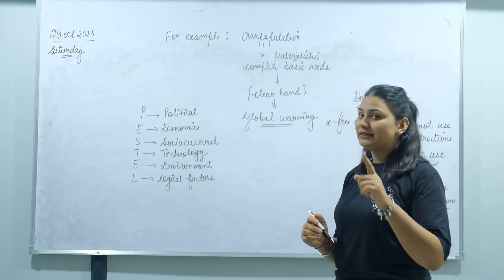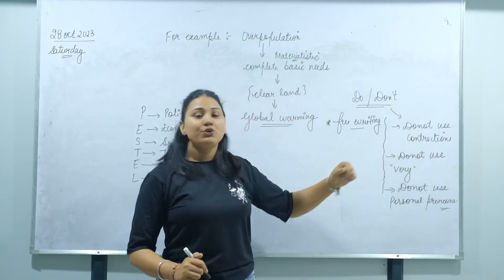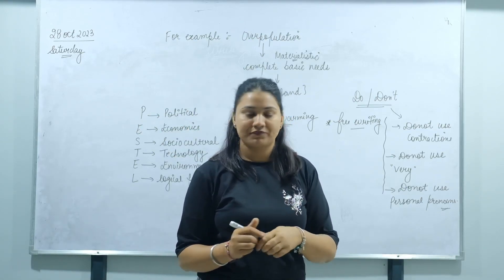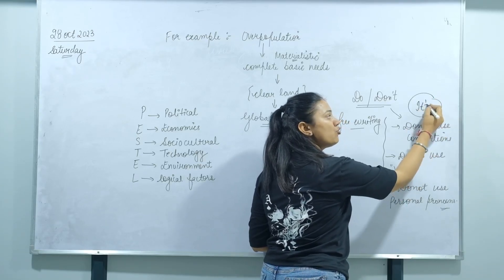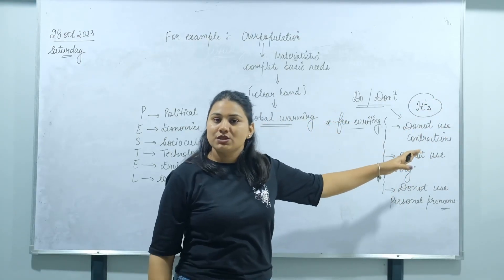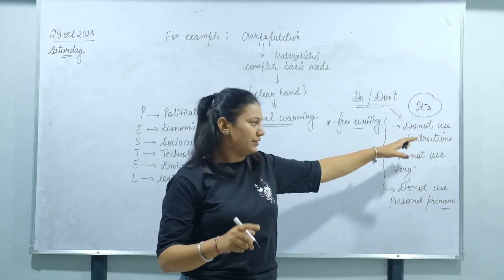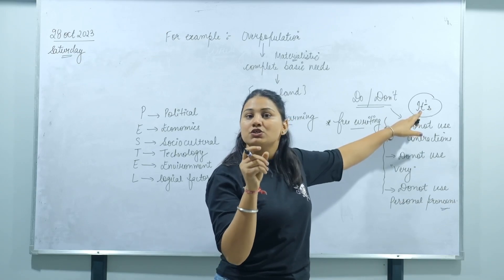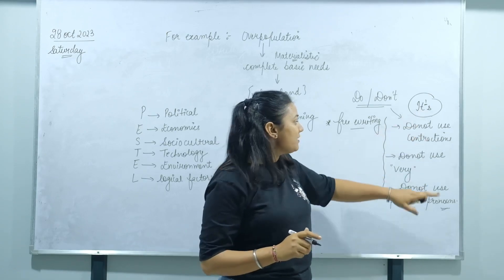Now the don'ts. Don't use contractions. For example, some students use it's (I-T-apostrophe-S). Don't do such types of mistakes in writing task 2 because it is formal, not informal writing. You can use 'it is', not 'it's'. Don't use 'don't', use 'do not'. Don't use 'won't', use 'will not'.